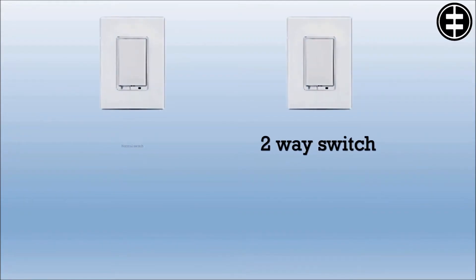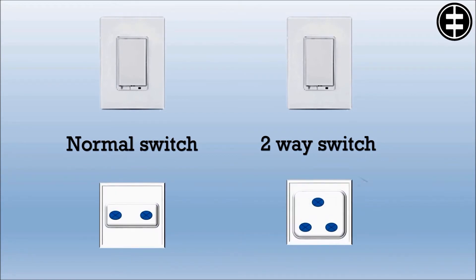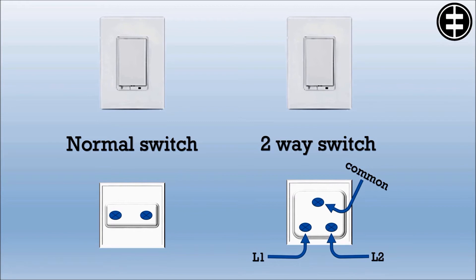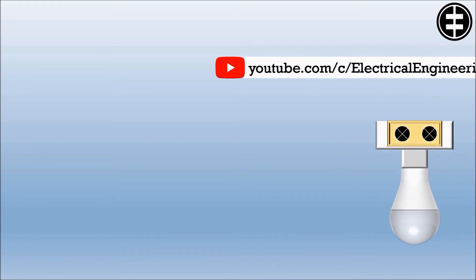The two-way switch looks the same as a normal switch from the front, but from the back side you will find three terminals: one is called common, and the others are called L1 and L2. Consider the common as an input and L1 and L2 as outputs. With a multimeter, you will find the common is always closed with one side and open with the other. By flipping the switch, the status of the two contacts changes, allowing you to change the current flow each time you switch.